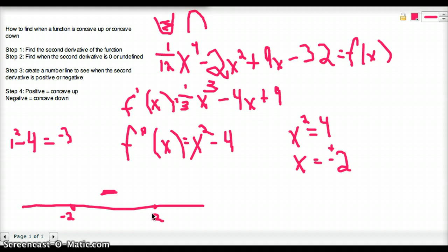And then we're going to take a value greater than 2 and plug it in to the second derivative. So let's do 3. So 3 squared minus 4, same thing as 9 minus 4, which equals 5. And that is positive.